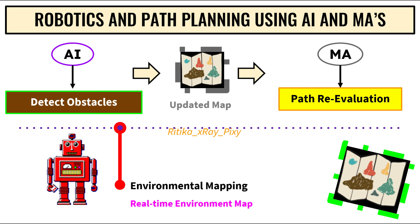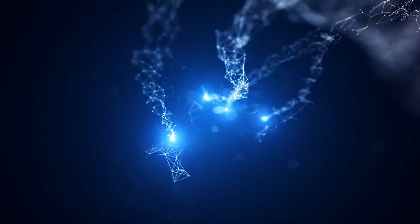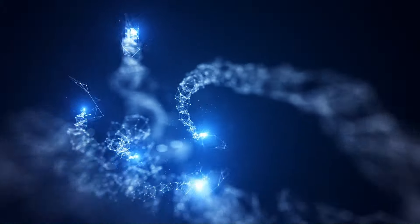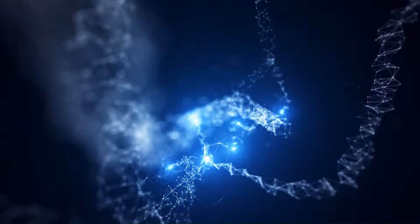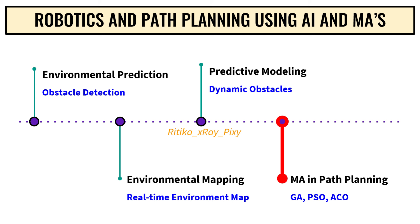For predictive modeling of dynamic obstacles like people, animals, vehicles, or other moving objects, artificial intelligence can predict their movement based on past behavior, enabling the robot to anticipate their future locations. Meta-heuristic algorithms then use the information provided by AI to plan and modify pathways dynamically. Common meta-heuristic algorithms used in path planning include genetic algorithm, particle swarm optimization, and ant colony optimization.